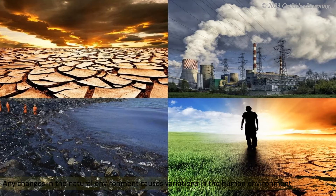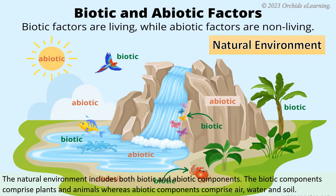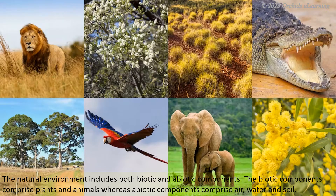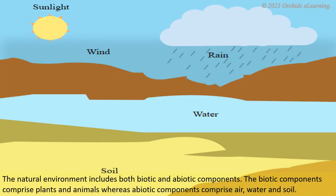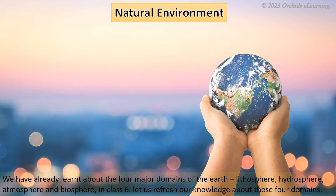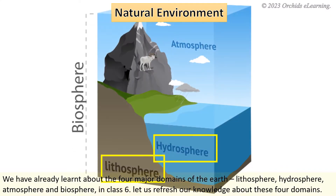Any changes in the natural environment causes variations in the human environment. The natural environment includes both biotic and abiotic components. The biotic components comprise plants and animals. The abiotic components comprise air, water, and soil. We have already learnt about the four major domains of the Earth: Lithosphere, Hydrosphere, Atmosphere, and Biosphere in class 6.